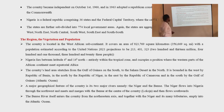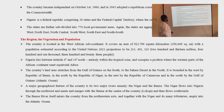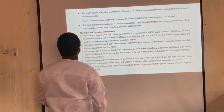A major geographical feature of the country is its two major rivers: the River Niger and the Benue. The Niger flows into Nigeria through the northwest and merges with the Benue at the center of the country at Lokoja, then flows southwards. The Benue River enters the country from the northeast and together with the Niger and its many tributaries empties into the Atlantic Ocean.